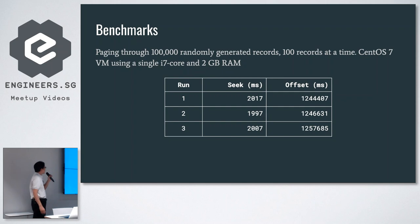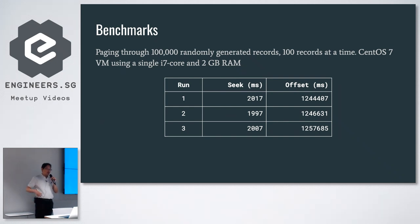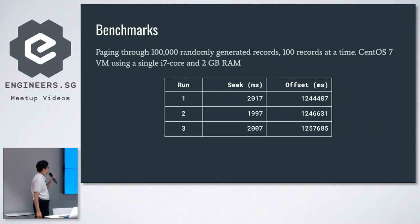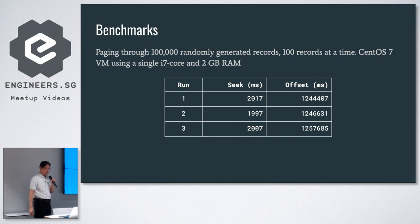I did some benchmarks between the offset method and the seek method. I generated about 100,000 randomly generated records and paged through them 100 records at a time on a little VM on my machine. The results were better than I expected — it's almost on the order of 60 times faster.